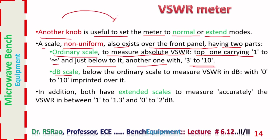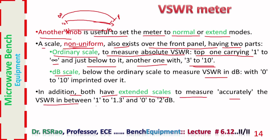One part is the ordinary scale to measure absolute VSWR — the top scale carries 1 to infinity, and just below it another scale with 3 to 10. The rightmost point is 1 and the leftmost is infinity. A dB scale also exists below the ordinary scale to measure VSWR in dB — at one end 0 dB and at the other end 10 dB. Extended scales also exist to measure VSWR accurately in the range 1 to 1.3, or 0 to 2 dB (since 1 in dB is 0 and 1.3 in dB is 2).